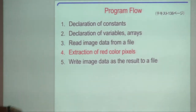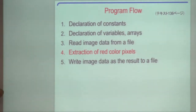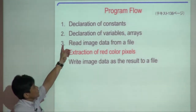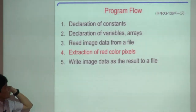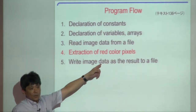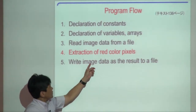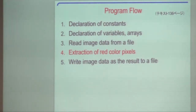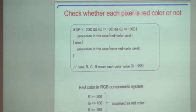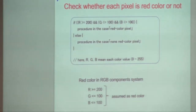The program consists of five operations: first, declare constant values; second, declare variables and arrays; third, read the image data file; fourth, extract red color pixels and change them to black; fifth, write the result data into an image file.